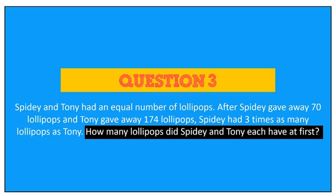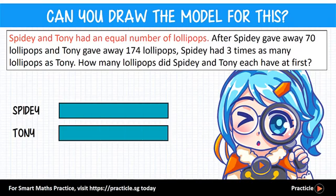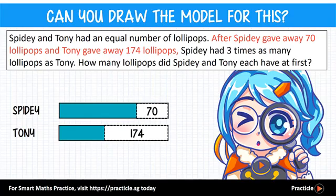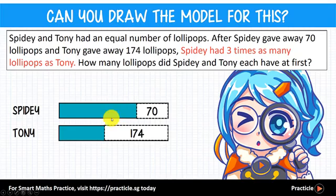How would you draw the bar model for this? Try this out for yourself! Welcome back. Here we have Spidey and Tony — they started off with an equal number of lollipops, so let's draw 2 bars that are the same length. Here's a pro tip: for such questions, a better way to draw the model is to read through the change, leave it for the time being, and draw the model for what happens after the change first.